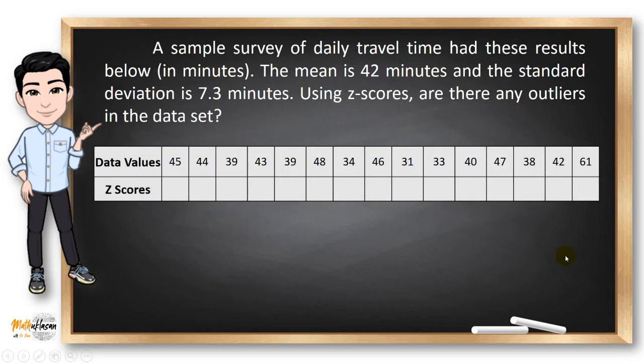For example, a sample survey of daily travel time had these results below in minutes. The mean is 42 minutes and the standard deviation is 7.3 minutes. Using z-scores, are there any outliers in the dataset?